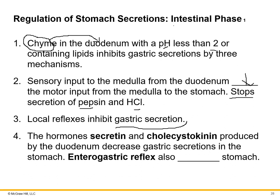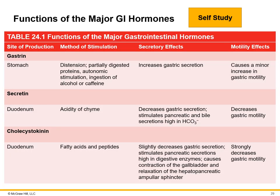As chyme enters the duodenum, the enterogastric reflex inhibits the stomach. The hormones secretin and cholecystokinin are secreted in the duodenum and travel back to the stomach, telling G cells to downregulate gastrin secretion. There is a self-study table covering secretions, their site of production, stimuli, effects, and motility effects — expect exam questions based on this information.